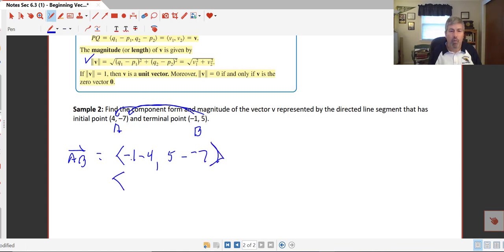So negative 1 minus 4 is negative 5, and 5 minus negative 7 is 12, so negative 5, 12 is our component form.